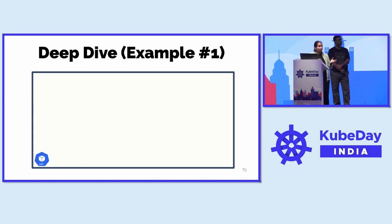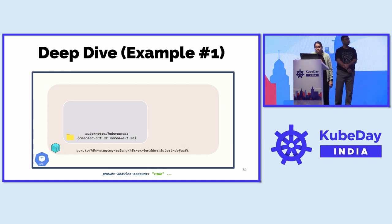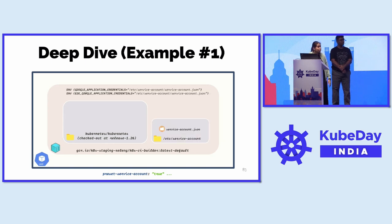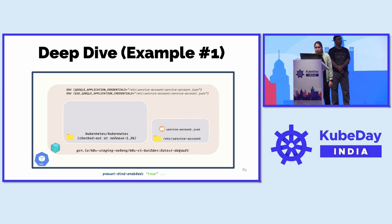When that job actually runs inside a Kubernetes cluster, here's how it looks: Prow gets triggered, a pod is created using the container image k8s-ci-builder. We gave it information on where to check out the code, so it clones kubernetes/kubernetes at release-1.26 branch. The preset-service-account label, when set to true, sets up environment variables — Google Application Credentials and E2E Google Application Credentials — for interacting with the GCS bucket where we'll store our build artifacts.